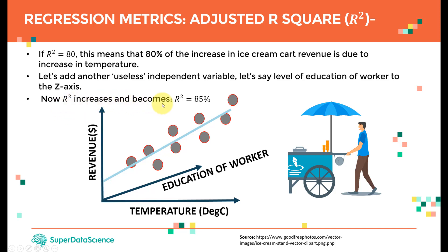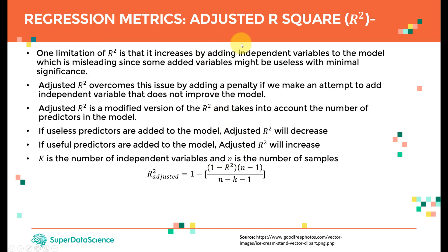You might be tempted to keep adding independent variables since R-square keeps going up. Unfortunately, some of these parameters might be useless — like education of workers, which has nothing to do with revenue. This is a key limitation of R-square: it increases by adding independent variables to the model, which is misleading since some added variables might have minimal significance. That's why we calculate adjusted R-square.